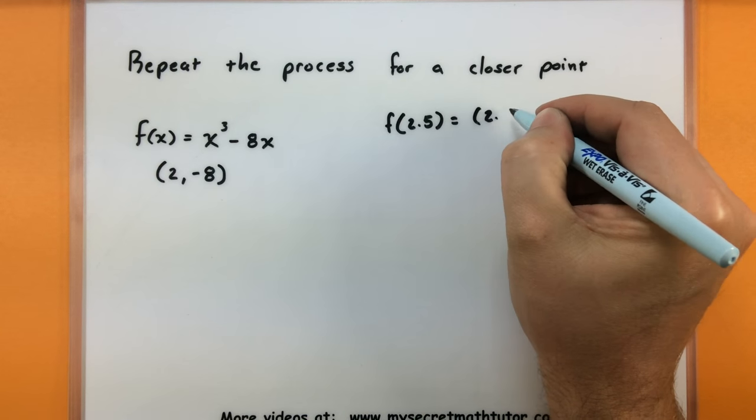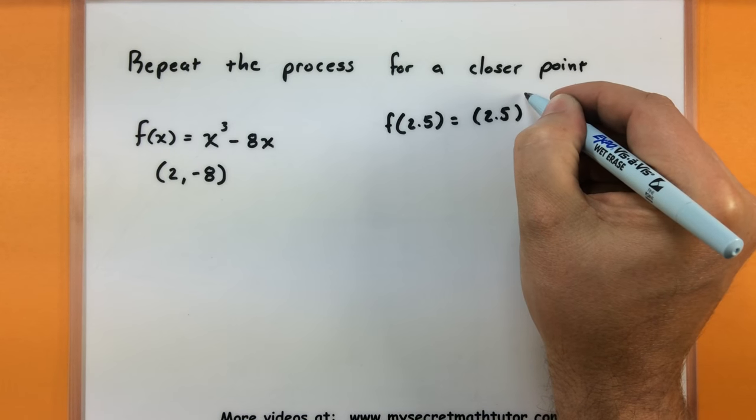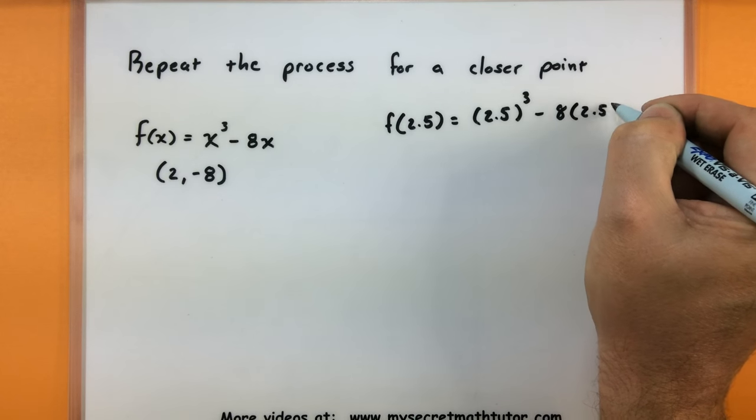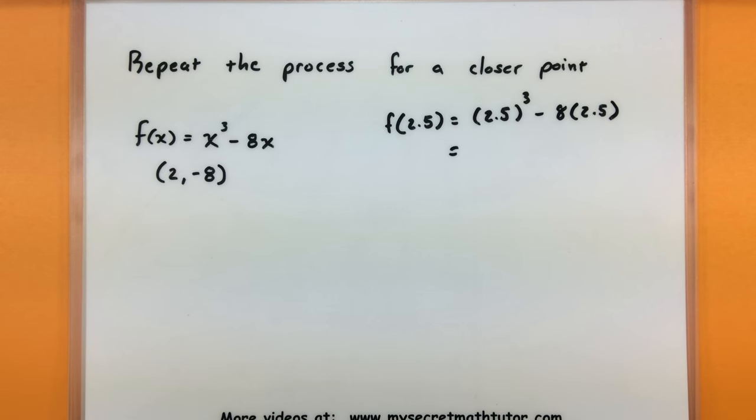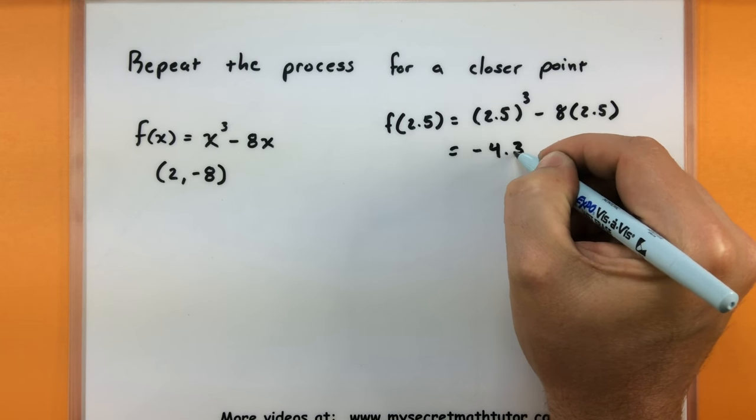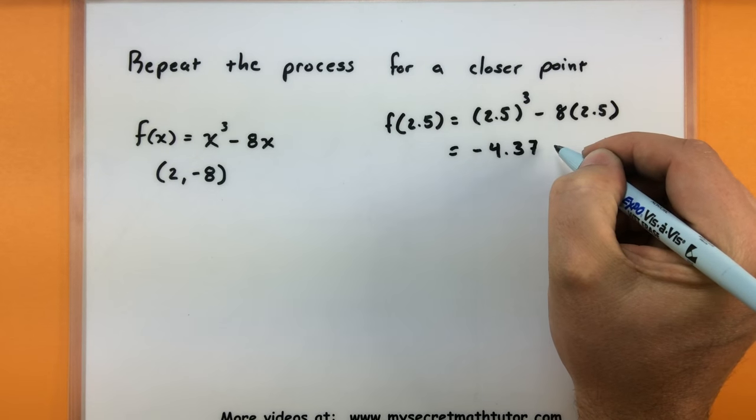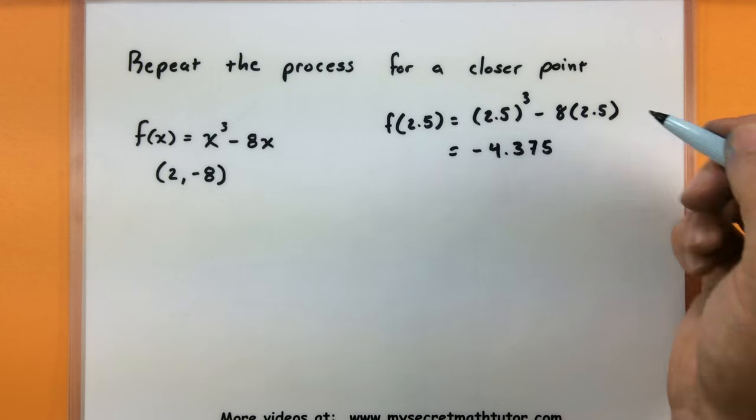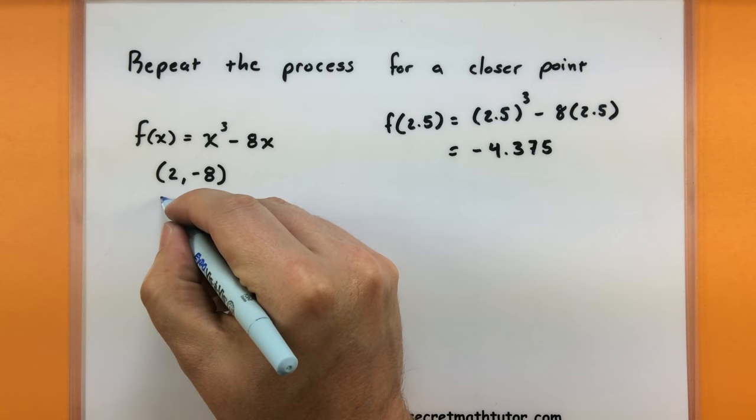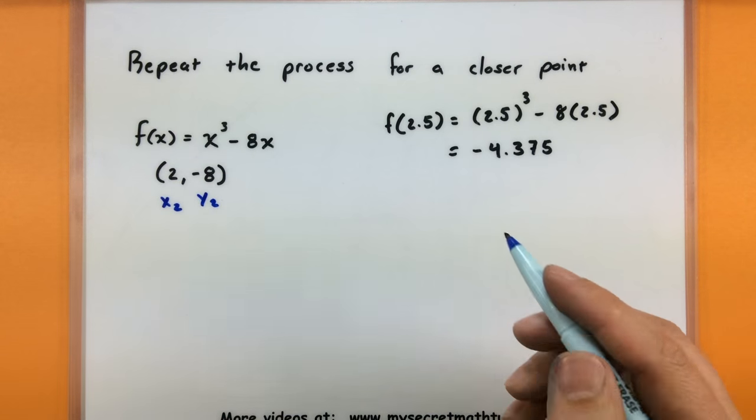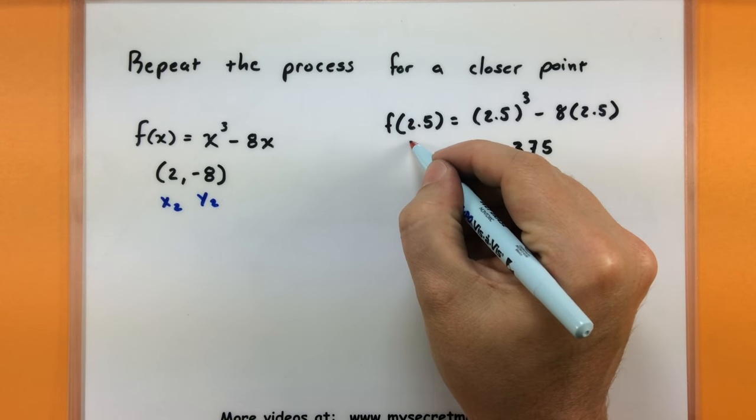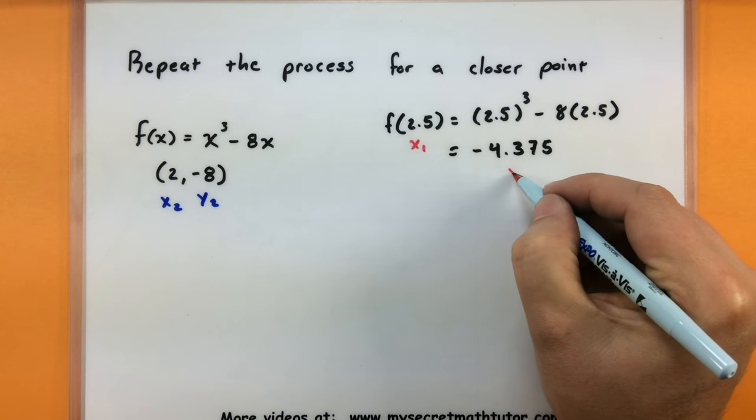Like before, you want to imagine putting this into your function so that you can get a y value out of it. Let's see, I did this earlier on our calculator. I got the value of negative 4.375. So again you want to look at this as like your x and y pair. And over here we have yet another x and y pair. We'll call this x1 and y1.